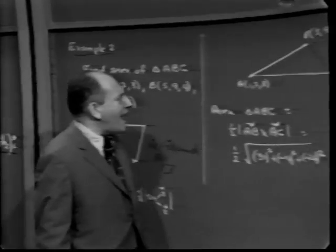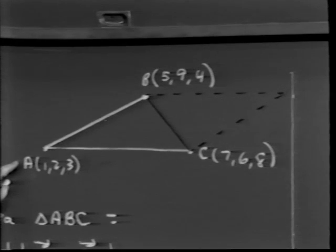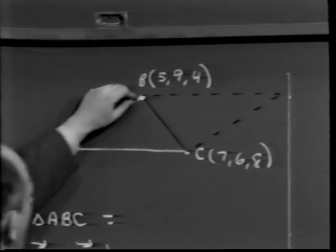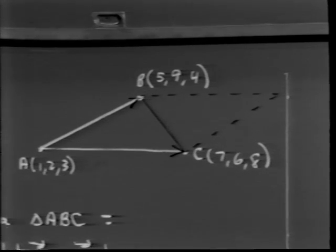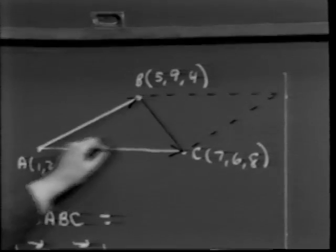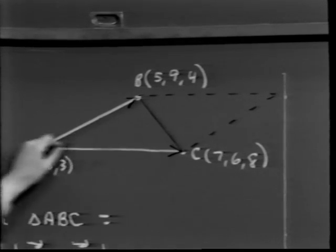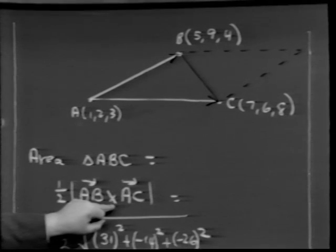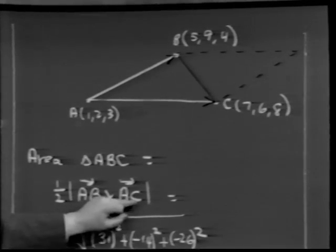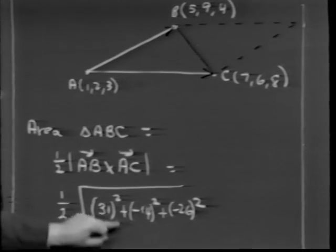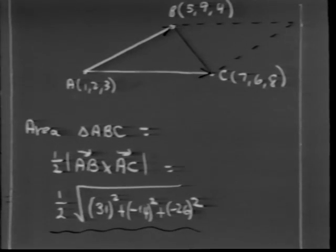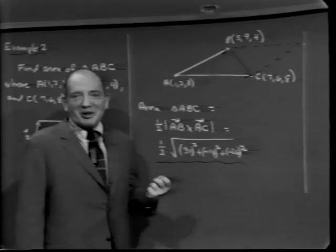Getting back to the triangle: the magnitude of AB × AC is the area of the parallelogram with AB and AC as edges. The triangle is precisely half the parallelogram. So the area of the triangle is simply ½|AB × AC|. We square each component of AB × AC, add them, extract the positive square root, and multiply by ½.